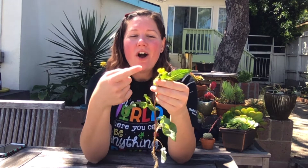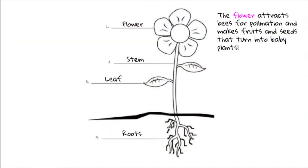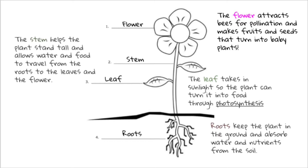That leaves just our last part — all the way at the top is the flower. What do you notice about our flower up here? It's a different color; this one's yellow. It's very pretty and also kind of wide and open. The flower attracts bees for pollination and makes fruits and seeds that turn into baby plants. The bright colors and the big shape means more bees can land there. All of the plant parts work together to help the plant survive: the roots keep it in place, the stem helps it stand tall, the leaf makes the food, and the flower attracts pollinators.